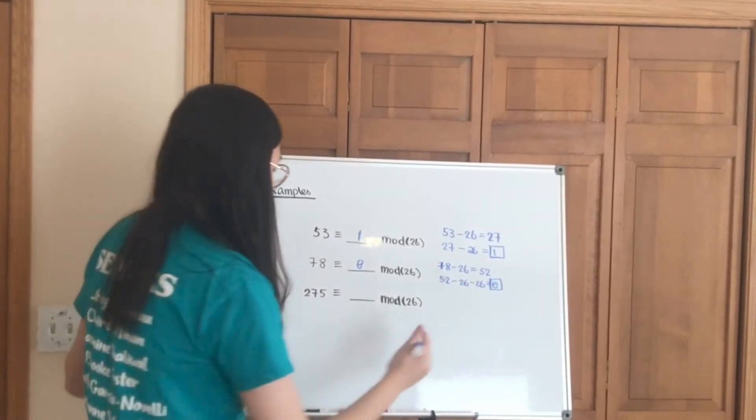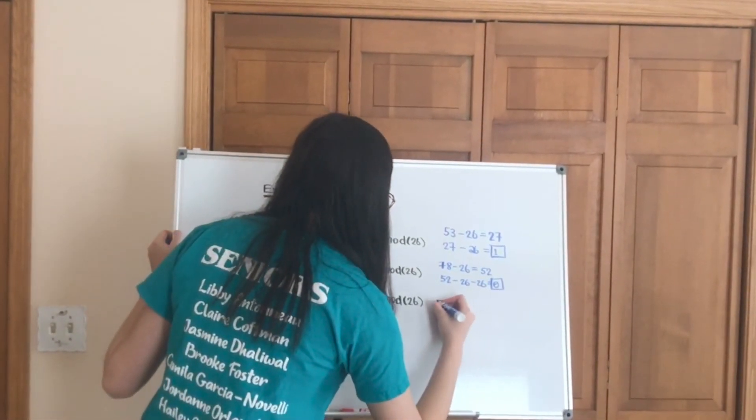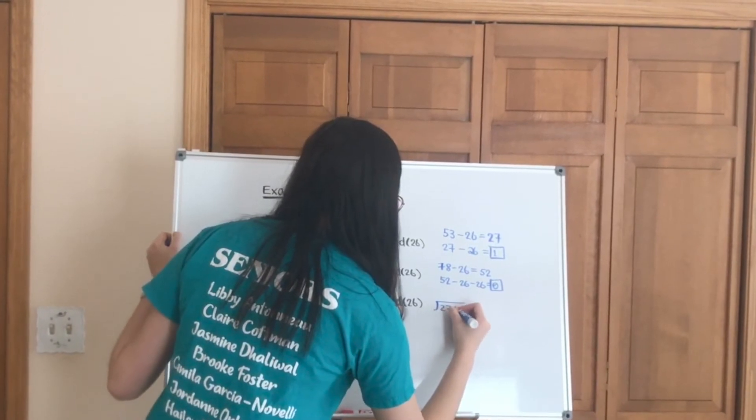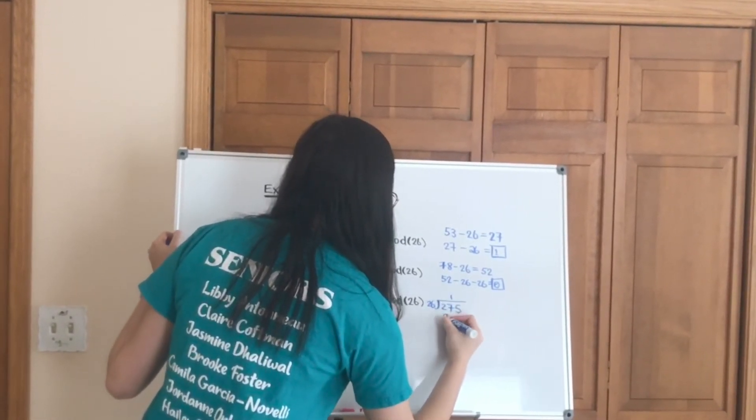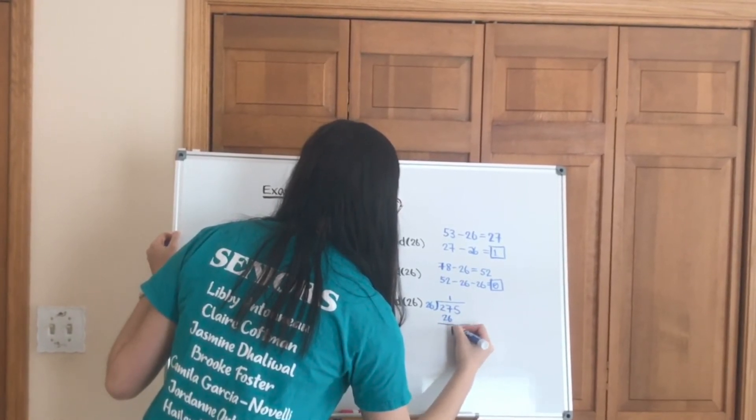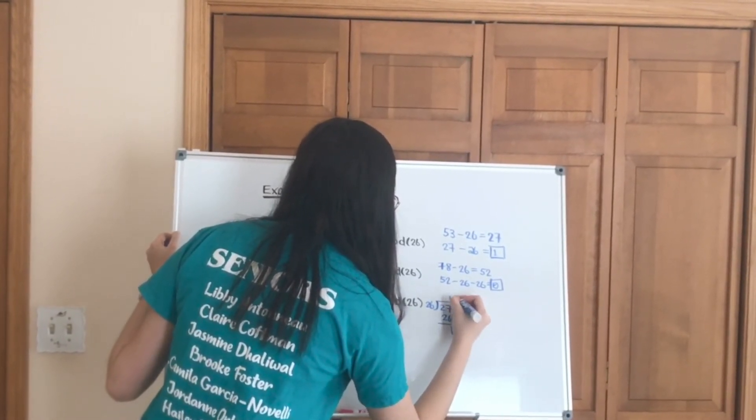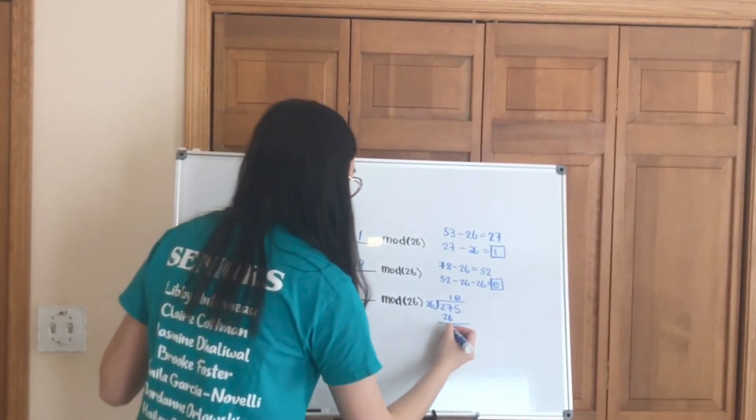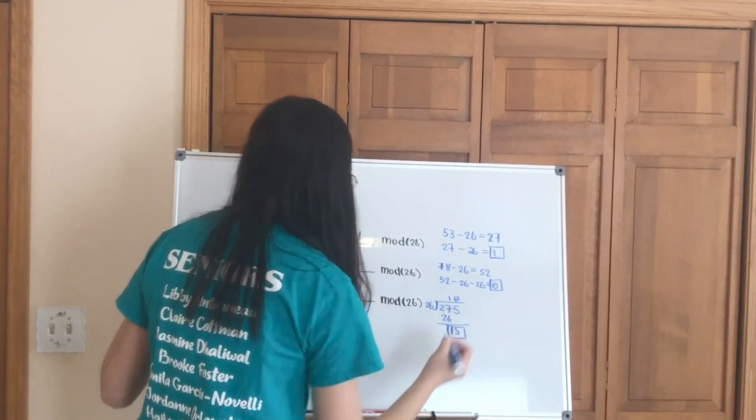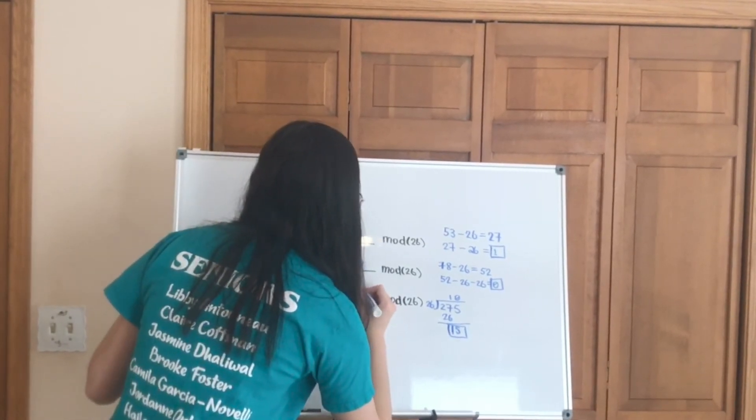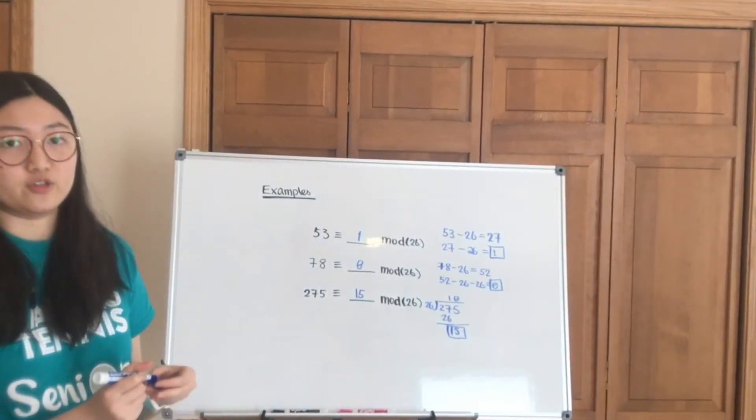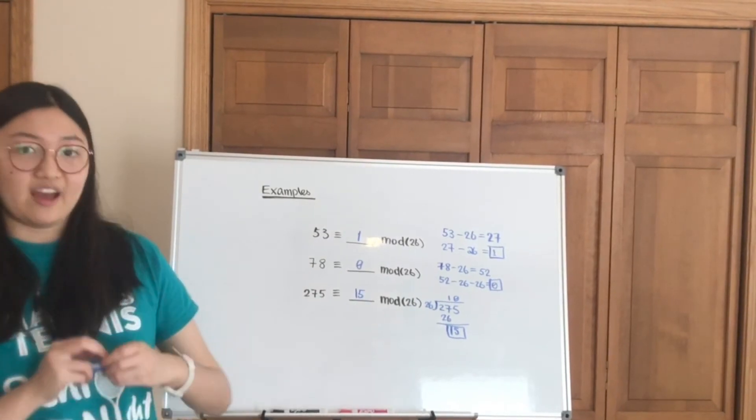So in that case, we can know that 275 divided by 26. So 1 times 26, 15, 0. There's no more 26s in 15. So 275 in mod 26 will be 15. It's basically the remainder after you divide whatever number you have by 26.